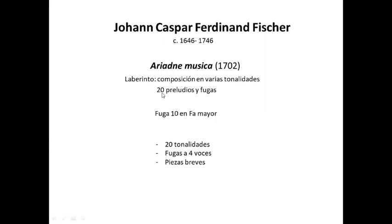Como hemos dicho, se trata de 20 preludios y fugas. Son piezas muy breves y la alternancia de preludios y fugas viene acompañada de un plan tonal ascendente que solo falta cuatro tonalidades para completar el círculo de quintas, que se completará más tarde ya con Mattheson y después con el Clave Bien Temperado de Johann Sebastian Bach.